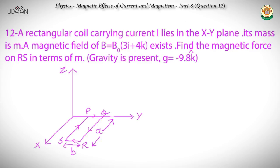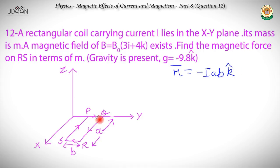Because of the current, the coil will have a magnetic moment, and torque = m × B, so it will have some torque. That torque will be balanced by the torque due to mg acting downwards. Had the mass not been there, the coil would not have been in equilibrium — it would be rotating with increasing angular velocity. So the mass compensates for the torque provided by the magnetic force.